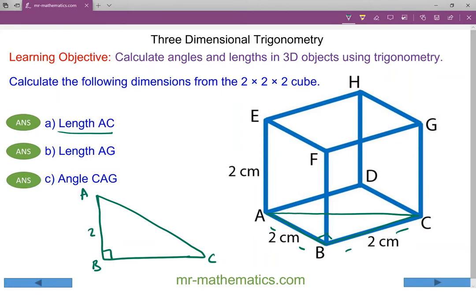We can calculate the length AC using Pythagoras's theorem. So AC squared equals two squared which is AB plus two squared which is BC. So AC squared equals four plus four which is eight. So AC is the square root of eight which is approximately 2.8 centimeters.